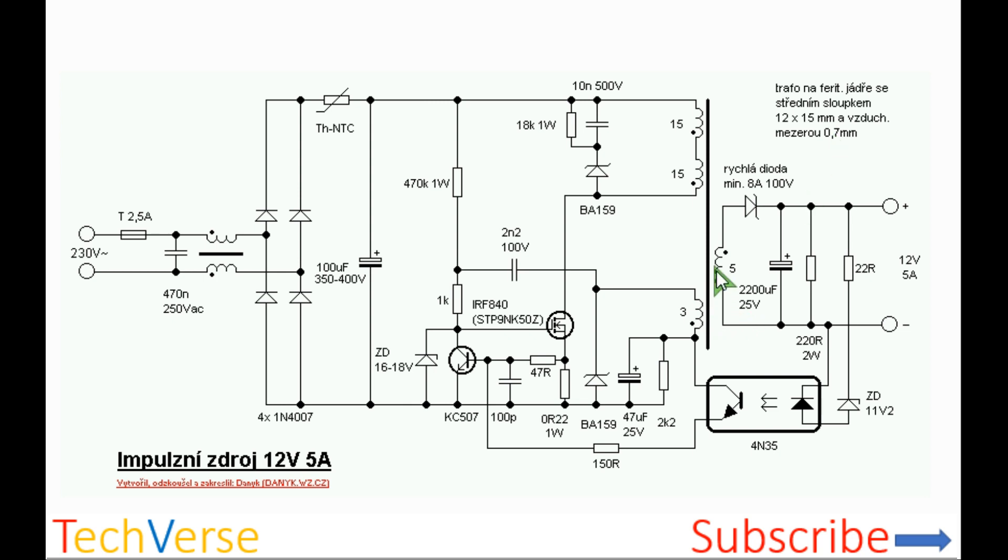Then you need to wind the 5 turns for the secondary winding. Between these two, you should add 5 layers of insulation tape. After winding the secondary turns, you put 5 layers of insulation tape.